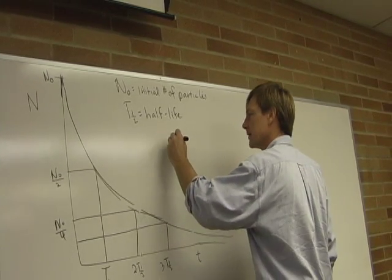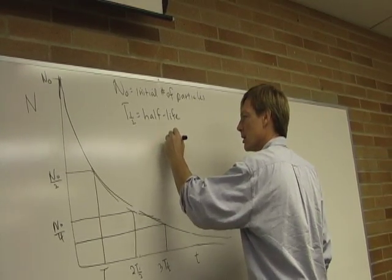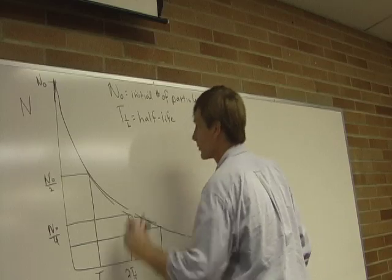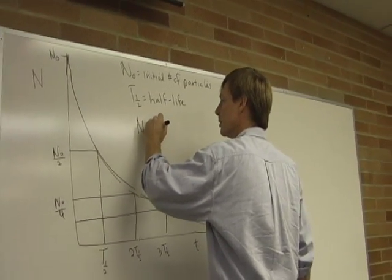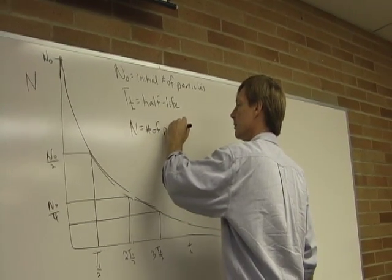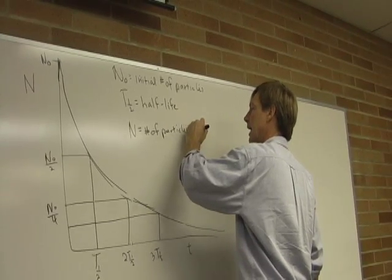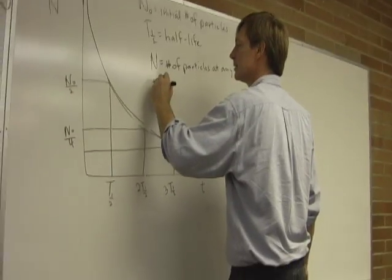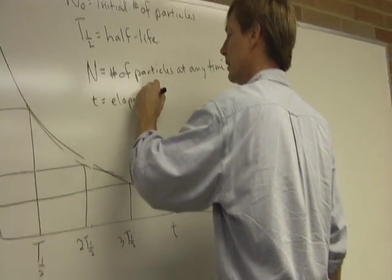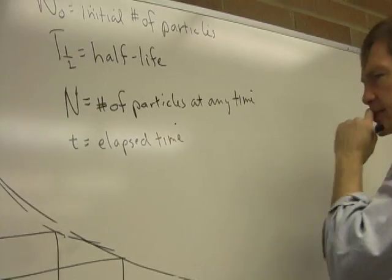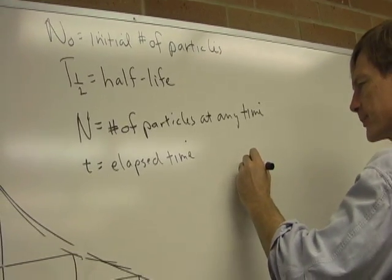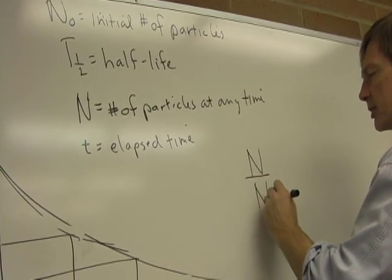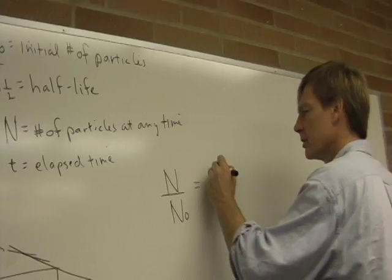Now, the way it works is, let's see, the number of atoms that I have, I should write that down, the number of particles. n equals number of particles at any time. And t is the elapsed time. So how does this work? Number of particles divided by the original particle, the fraction of particles that I have left.